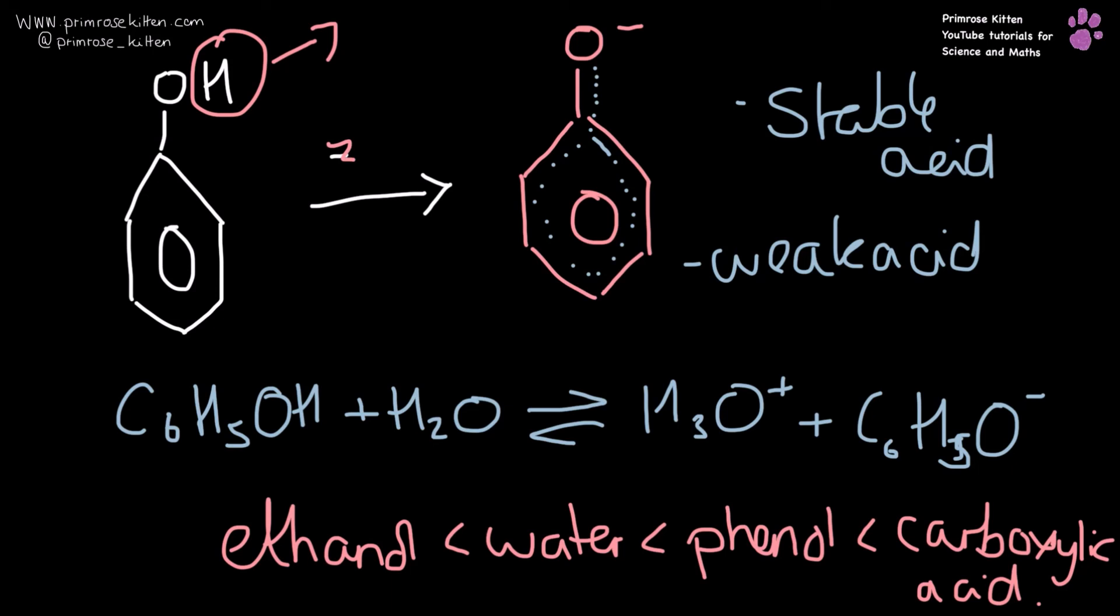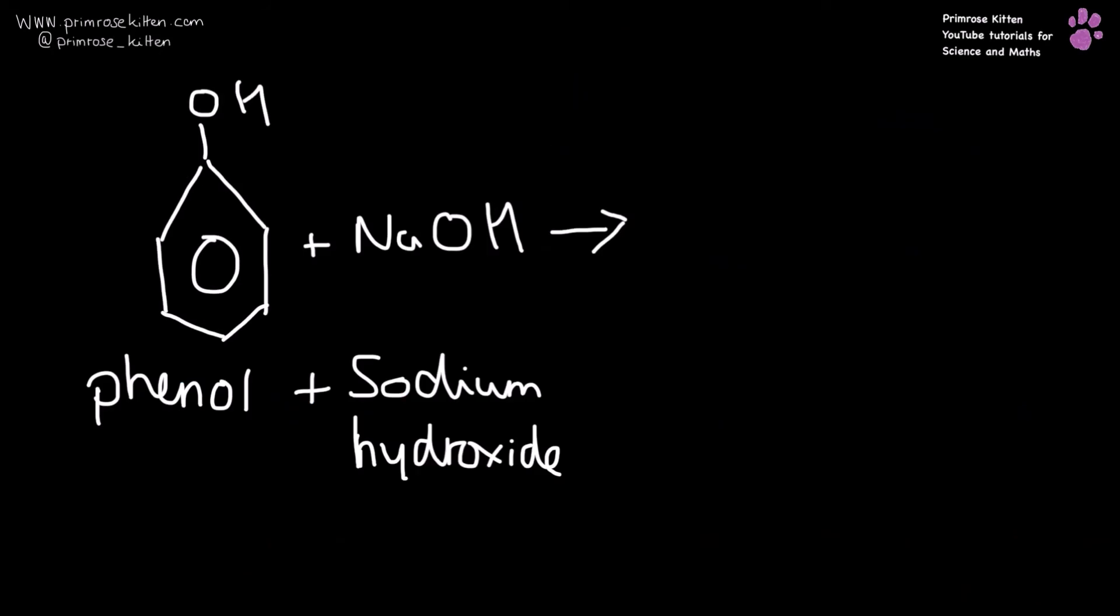When we react phenol with sodium hydroxide like lots of other things, we are going to get the hydrogen and the hydroxide ion reacting together so we are going to get water. The sodium ion is then going to be attracted to the negative of the oxygen that's left over after the hydrogen's gone off to form water, and what we are going to get is sodium phenoxide and water.